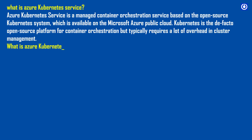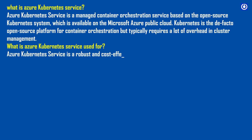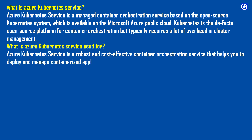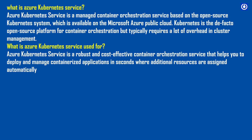What is Azure Kubernetes Service used for? Azure Kubernetes Service is a robust and cost-effective container orchestration service that helps you to deploy and manage containerized applications in seconds, where additional resources are assigned automatically without the headache of managing additional servers.